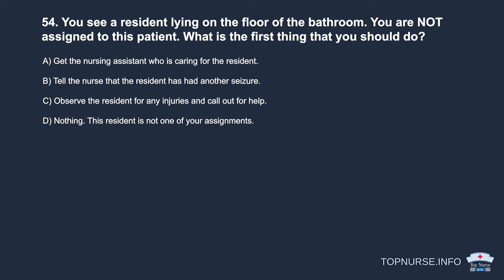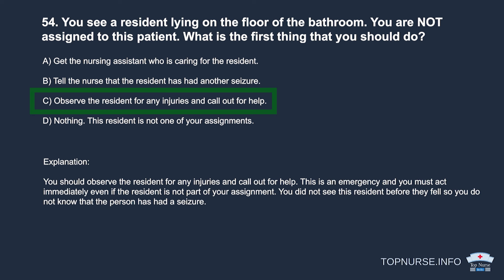Question 54: You see a resident lying on the floor of the bathroom. You are not assigned to this patient. What is the first thing you should do? a. Get the nursing assistant assigned to the resident. b. Tell the nurse the resident has had a seizure. c. Observe the resident for injuries and call out for help. d. Nothing — this resident is not your assignment. Correct answer: c. Observe the resident for injuries and call out for help. This is an emergency and you must act immediately, even if the resident is not part of your assignment.